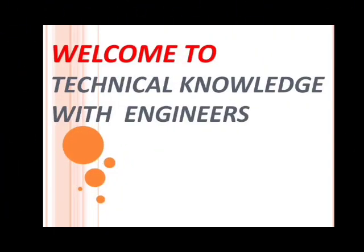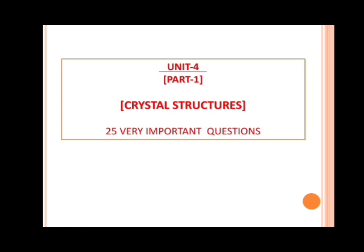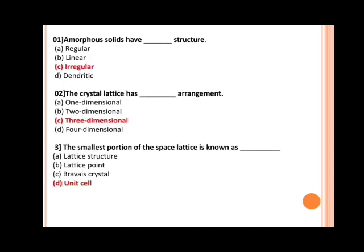Hello friends, welcome to Technical Knowledge with Engineers. Today I will tell you the most important questions of crystal structure in the form of MCQ which are very important from the university point of view. Let's start. Amorphous solids have dash structure. Options are: a) regular, b) linear, c) irregular, d) dendritic. The correct answer is irregular, as we all know that the atomic structure of amorphous material lacks long range order.